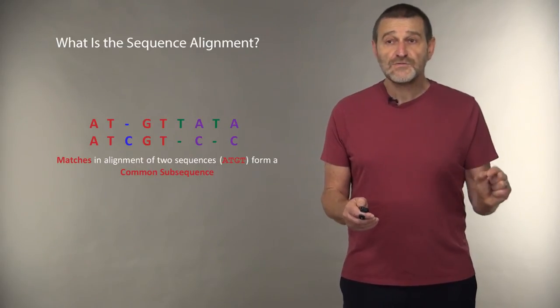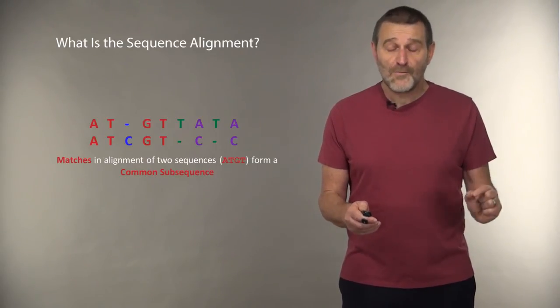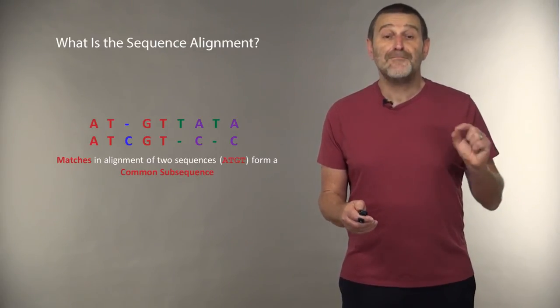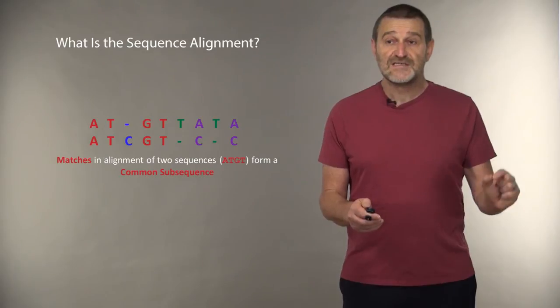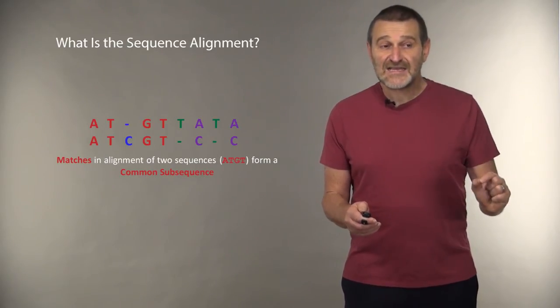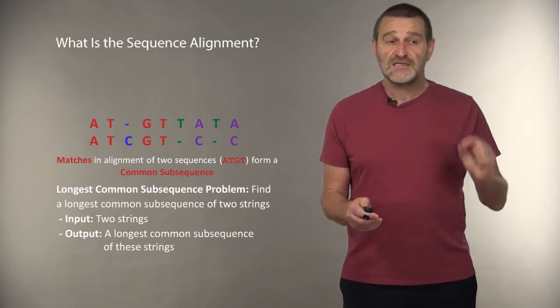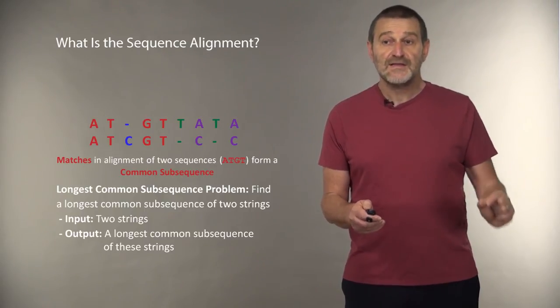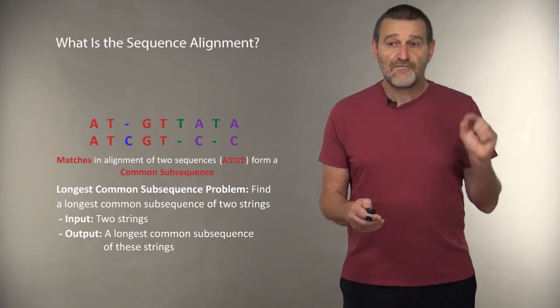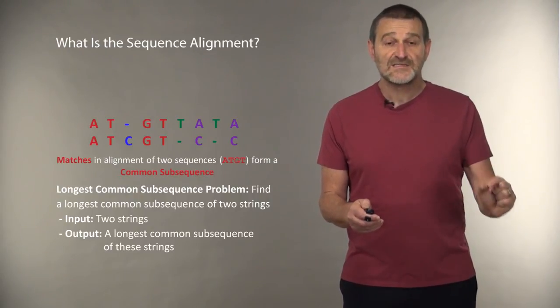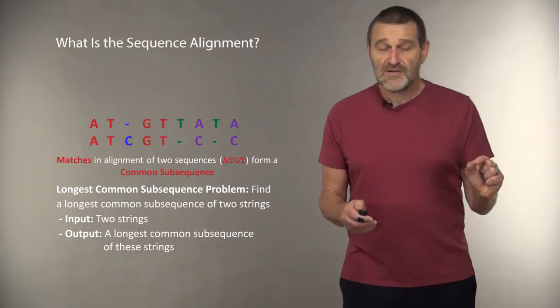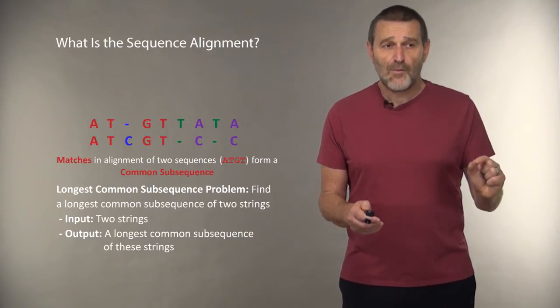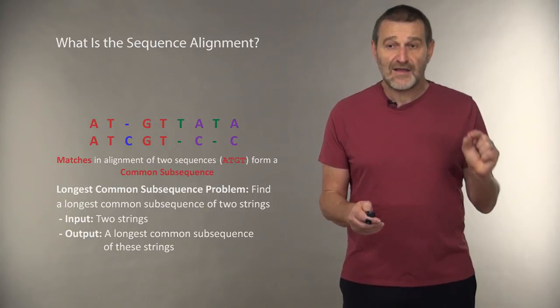We will also define the notion of common subsequence. Common subsequence between two sequences is simply matches in the alignment of these two sequences. And the classical problem in computer science is called the longest common subsequence problem. Given two strings, we want to find the longest common subsequence of two strings. This problem will be the key for our understanding of how biologists compare biological sequences.